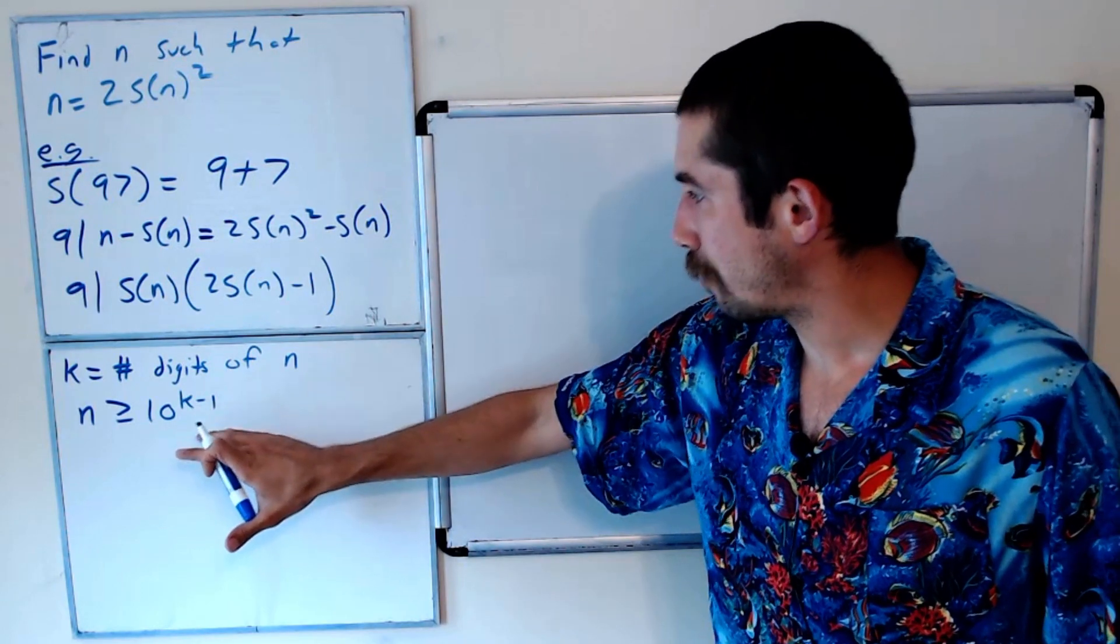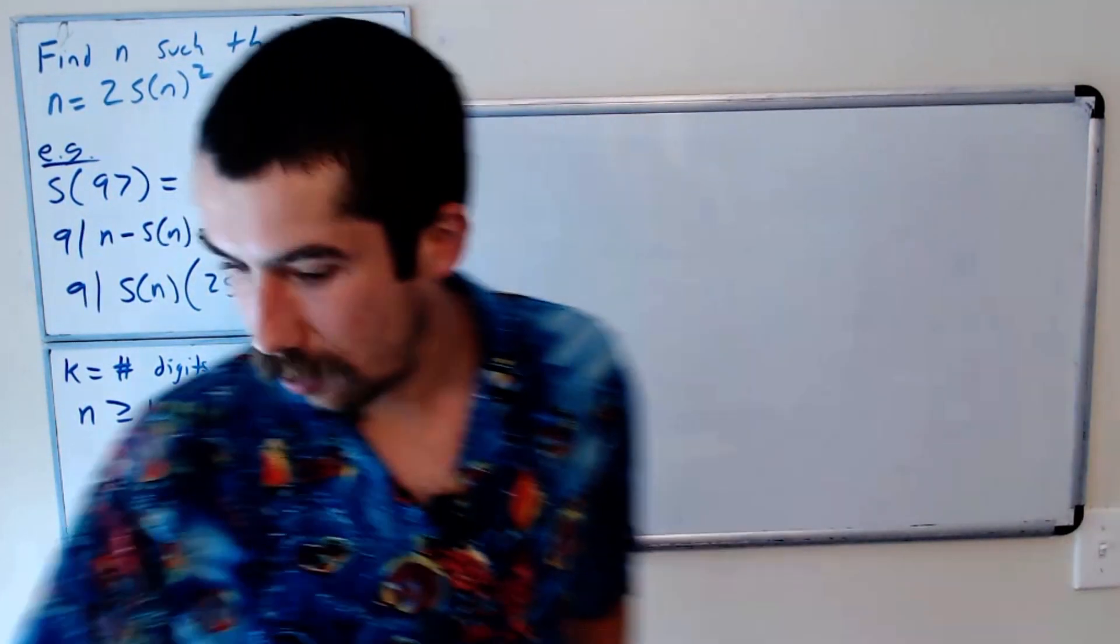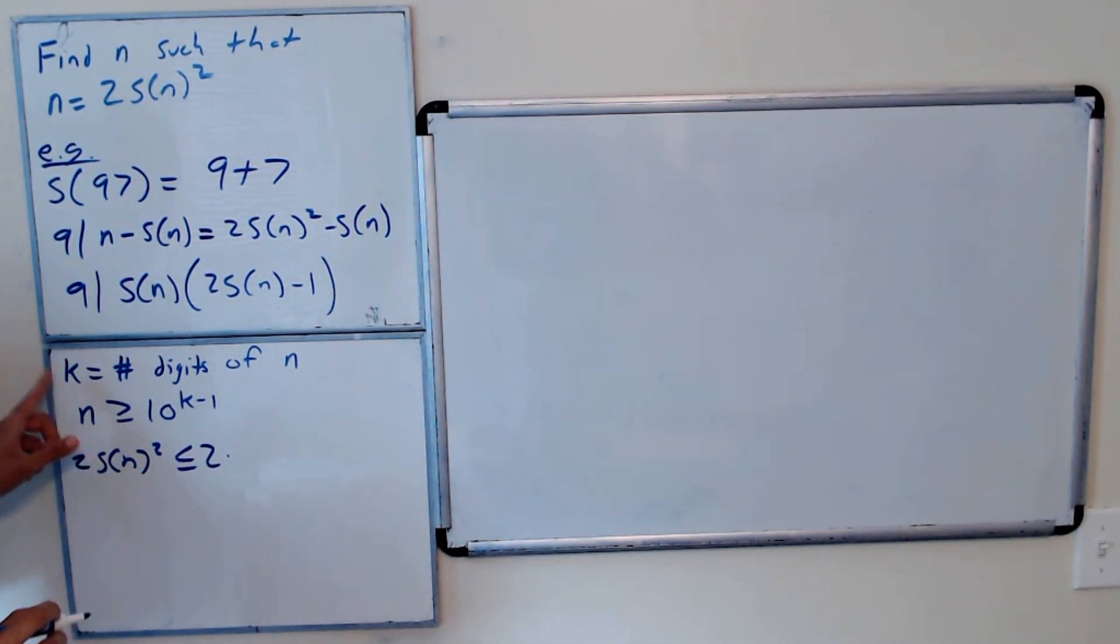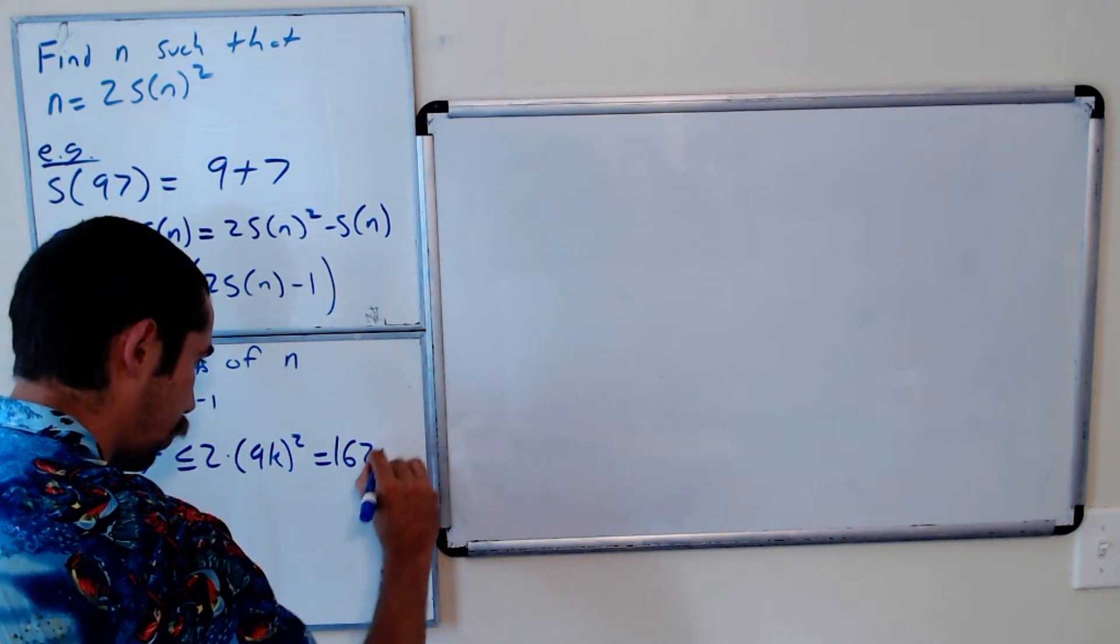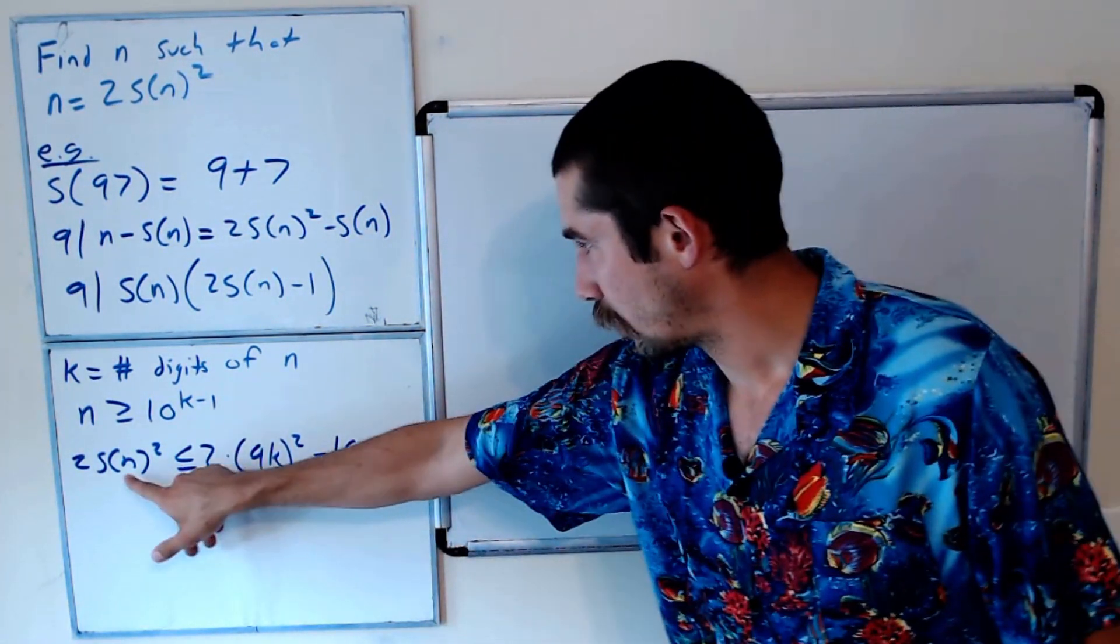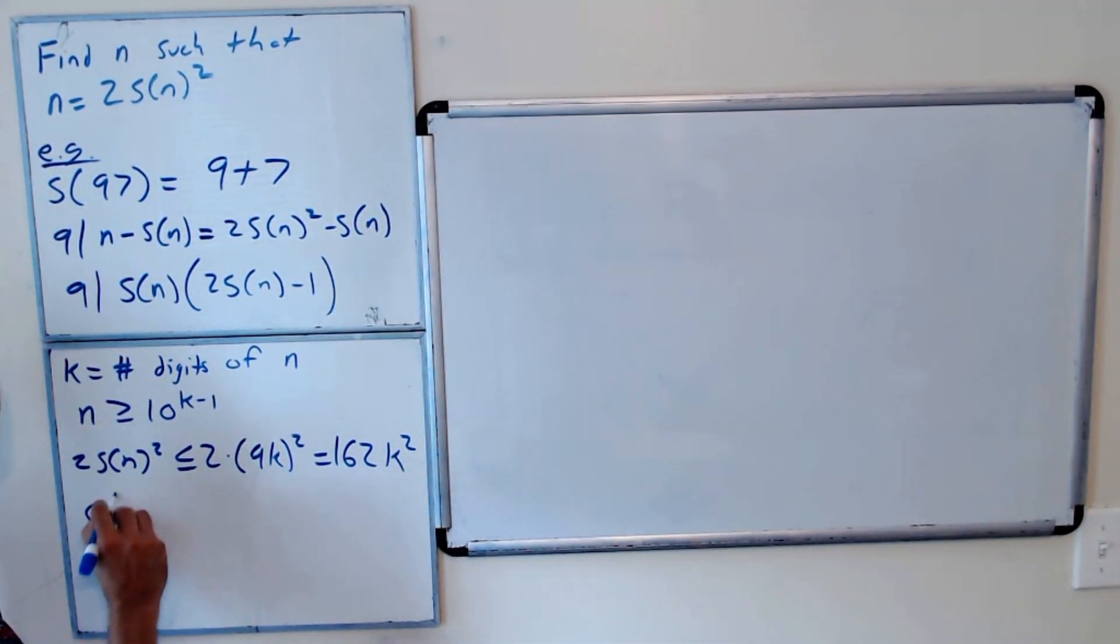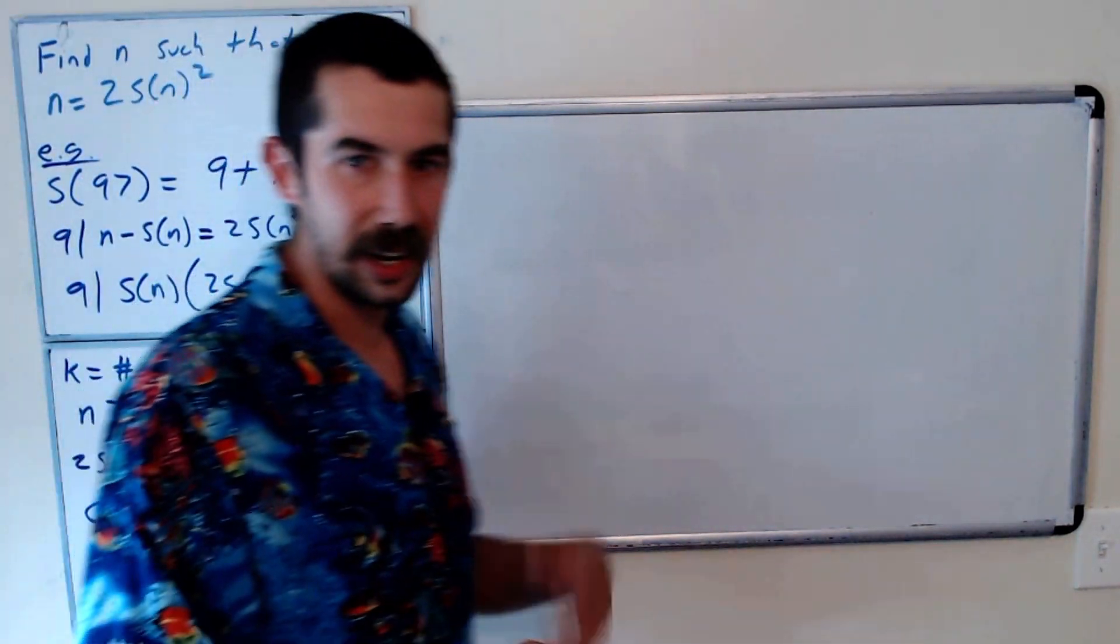And we can put a bound on the size of 2S(n)² because what's the biggest it could be is all nines. So 2S(n)² is less than or equal to 2 times, if all k of the digits are 9, so that's 9k squared, which is equal to 162k². This gives us a bound for n. It also gives us a bound for 2S(n)², and we're going to use this to show that k could be at most 4. So let's write that as a claim, and then we'll prove it. Our claim is that k must be less than or equal to 4. So the number of digits of n cannot exceed 4.